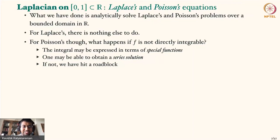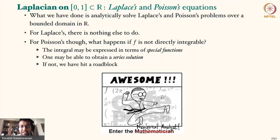If f in the Poisson problem is not integrable, even on a simple [0,1] domain with zero boundary conditions, you can't solve it analytically. We have hit a roadblock — and this is where numerical analysts shine. Many of you may have already taken courses in numerical methods, numerical analysis, or scientific computing, and may have seen something like this.